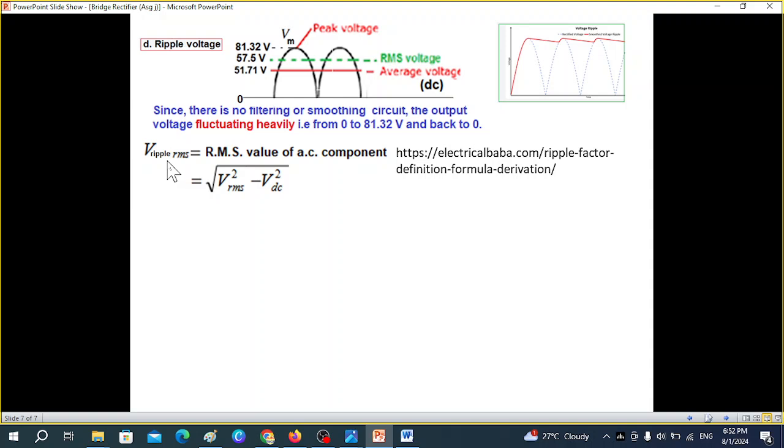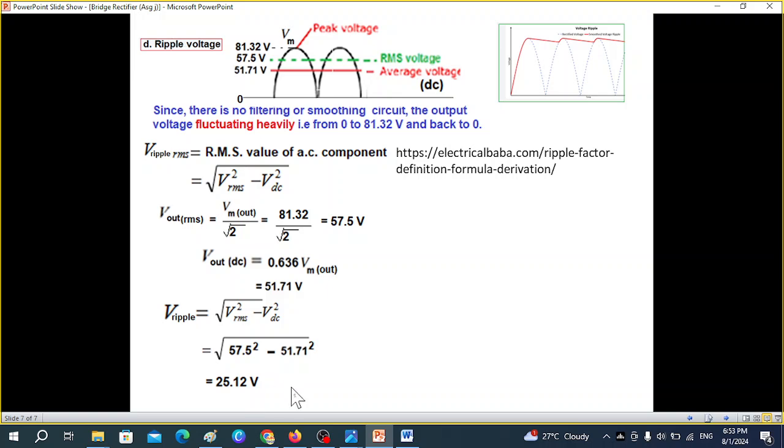So we ripple RMS. We have to find, we have to find RMS value of the ripple or the RMS value of this whole ripple, which is around the DC. Not this RMS voltage, rather this around this DC ripple. And the formula is V RMS square minus V DC square under root. And now this website has explained the detailed mathematical derivation. I will not go into this. So we'll just follow this formula. And now V RMS, we know is V M out over root 2, which 81.32 over root 2, which is 57.5 V out RMS, which we have already calculated here. And similarly, V DC is 0.636 V M, which also we have calculated here, 51.71. So putting these two values and solving, we get V ripple to be 25.12 volt.